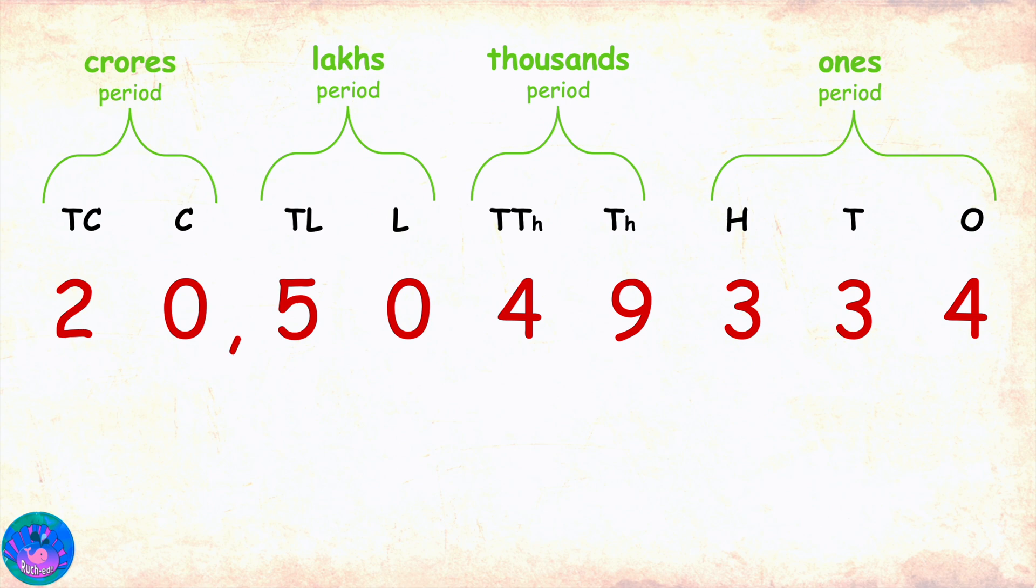Then, we'll put a comma between the periods and start reading from the left. This number is twenty crore fifty lakh forty-nine thousand three hundred and thirty-four. Very good!